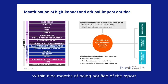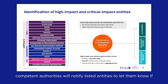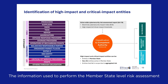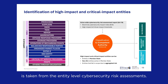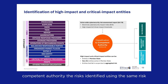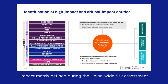Within nine months of being notified of the report, and no later than 48 months after it enters into force, competent authorities will notify listed entities to let them know if they've been identified as a high-impact or critical impact entity. The information used to perform the member state-level risk assessment is taken from the entity-level cybersecurity risk assessments. All high-impact and critical impact entities will report to their competent authority the risks identified using the same risk-impact matrix defined during the union-wide risk assessment.